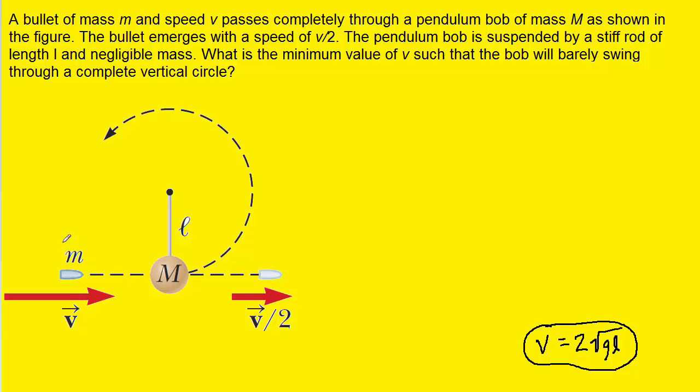Next, since there was a collision between the bullet and the bob, we can actually conserve momentum. And that simply means that the total final momentum of our system is going to equal the total initial momentum. Let's look at the final side of the equation first.